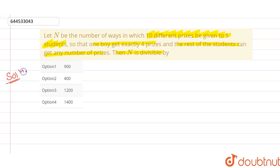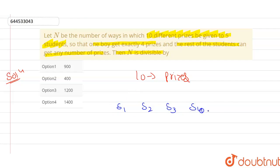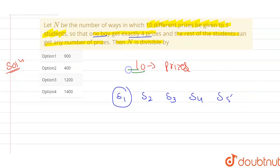In the solution, how many prizes are there? I have basically 10 prizes, and in a class where we have 5 students — S1, student number 1, student number 2, student number 3, number 4 and number 5 — it says that one boy gets exactly 4 prizes. So suppose this boy S1 is receiving 4 prizes.